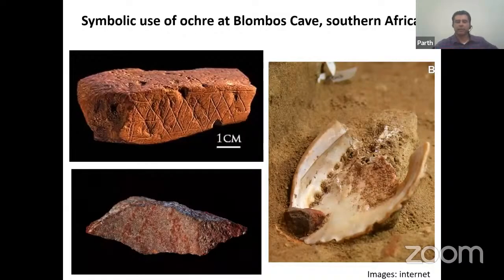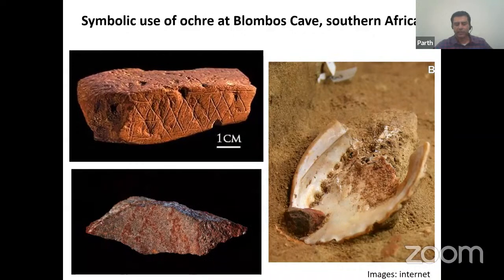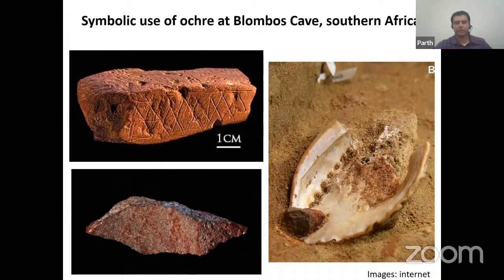The use of ochre as evidence of symbolic behavior starts very early, especially in Africa around 300,000 years ago, including long-distance transport, use of ochre in a symbolic manner, engravings in geometric patterns, ochre found on stone pieces, and ochre found in shells. These evidences come mainly from southern Africa and are another type of symbolic behavior going beyond rock art and sometimes connected with it.